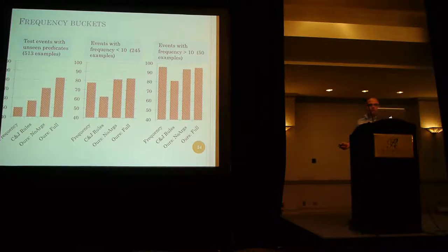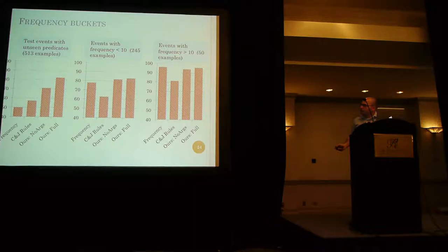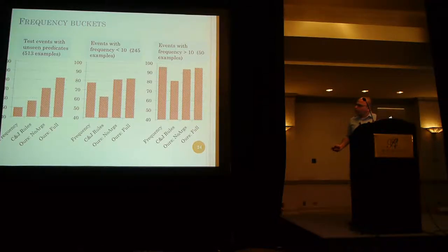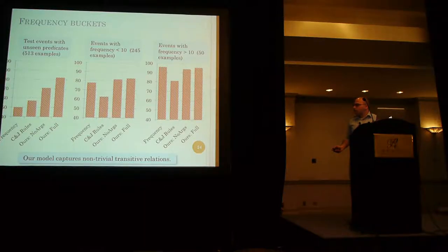We did another experiment with the natural data where we divided the test set into three frequency bands. The zero-frequency band has predicates that are never seen in the training data. The mid-frequency band has predicates seen one to ten times in the training data. The high-frequency band has predicates seen more than ten times. You can see that our model performs substantially well compared to other models even for the cases never seen in training. We also noticed that our model is able to learn non-trivial transitive relations — for example, if event A comes before B and B comes before C, the model is able to infer that A comes before C.